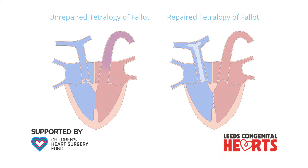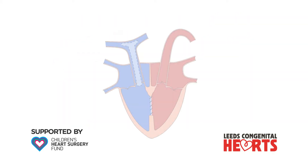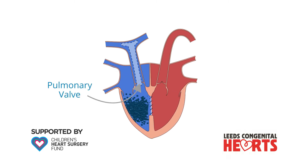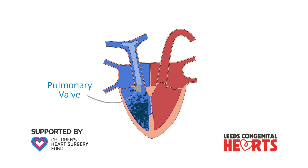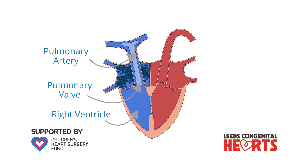A common consequence of surgery to repair Tetralogy of Fallot is that the pulmonary valve leaks. The function of the pulmonary valve is to prevent blood from returning to the right ventricle once it has been pumped into the pulmonary arteries.